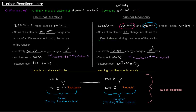In nuclear reactions, nuclei react because they are unstable. Unstable nuclei are said to be radioactive, meaning they spontaneously decay into some other nucleus.